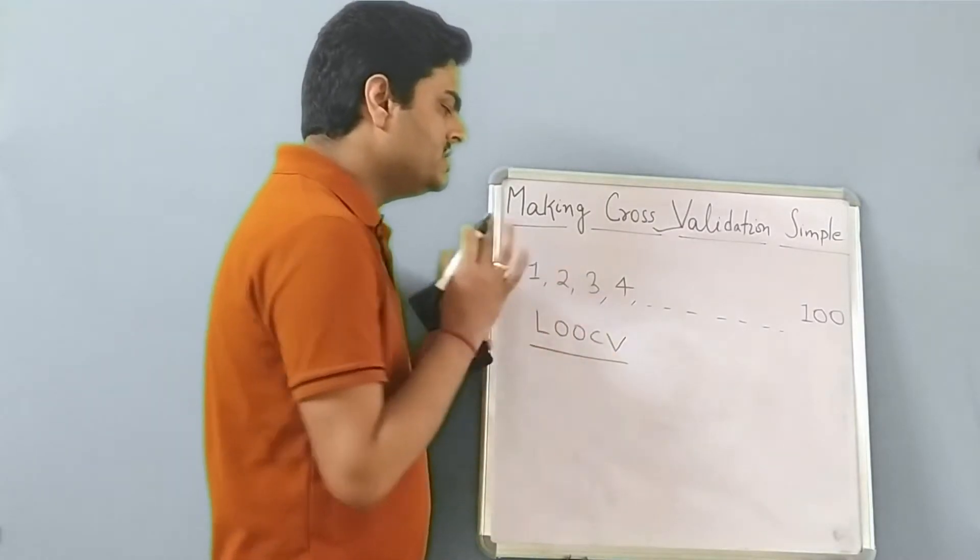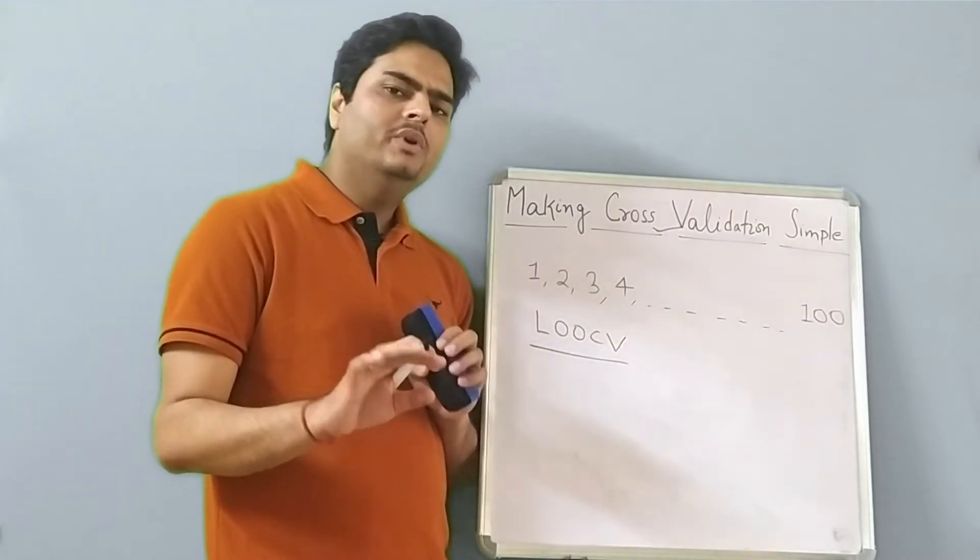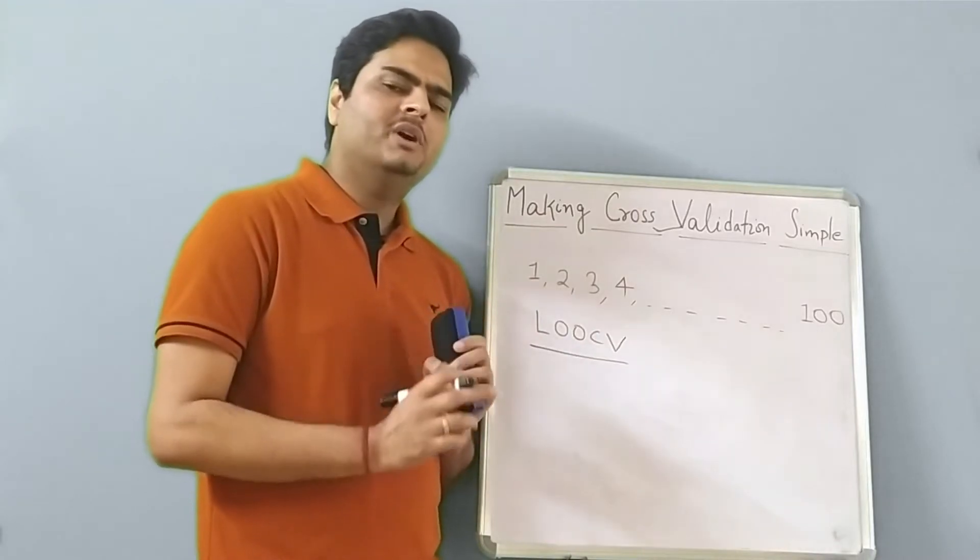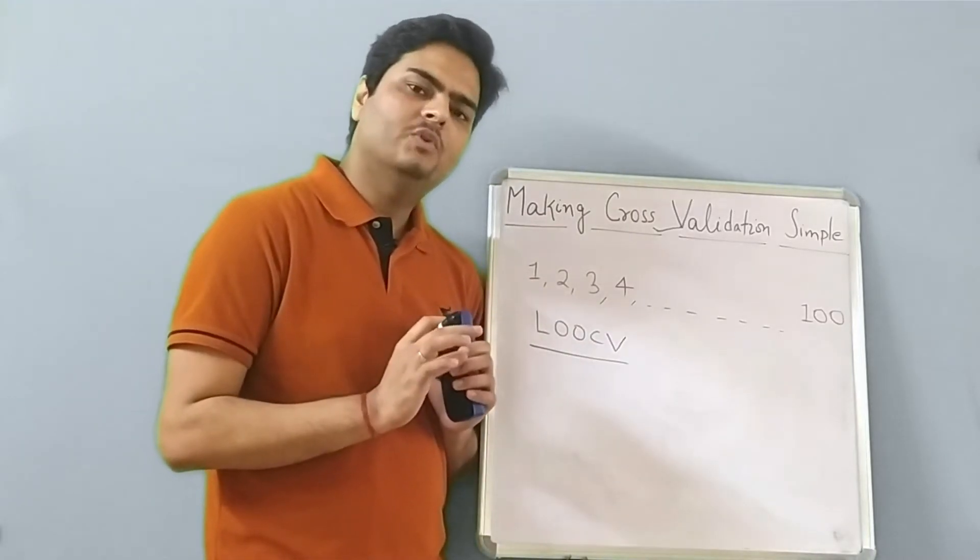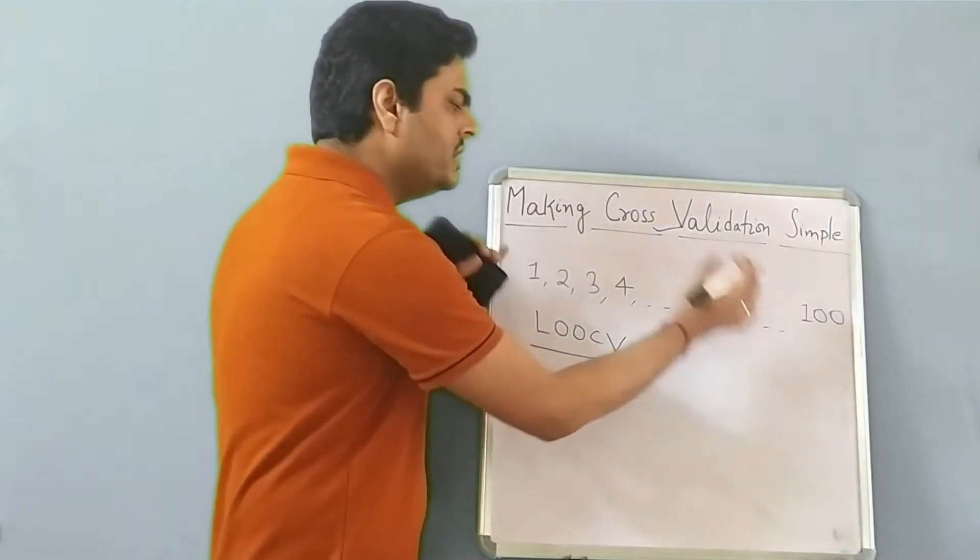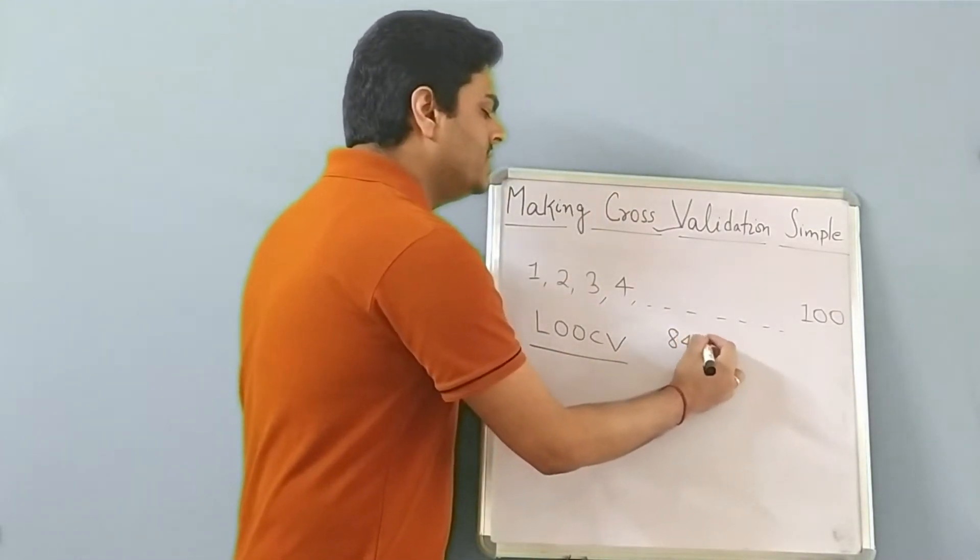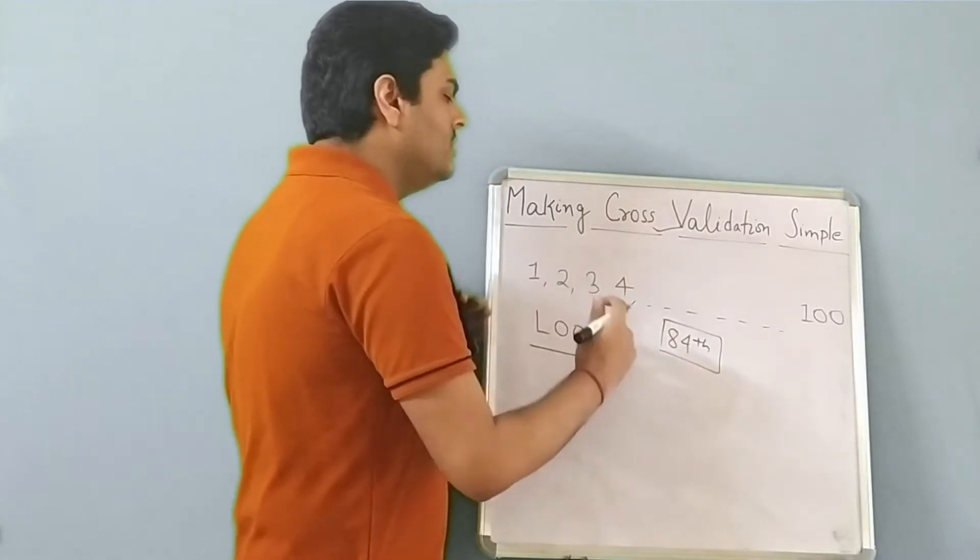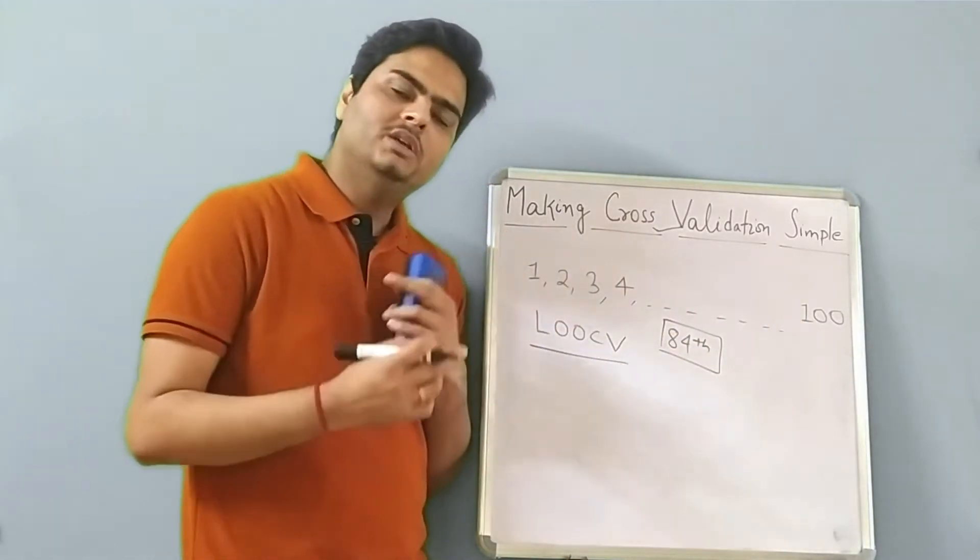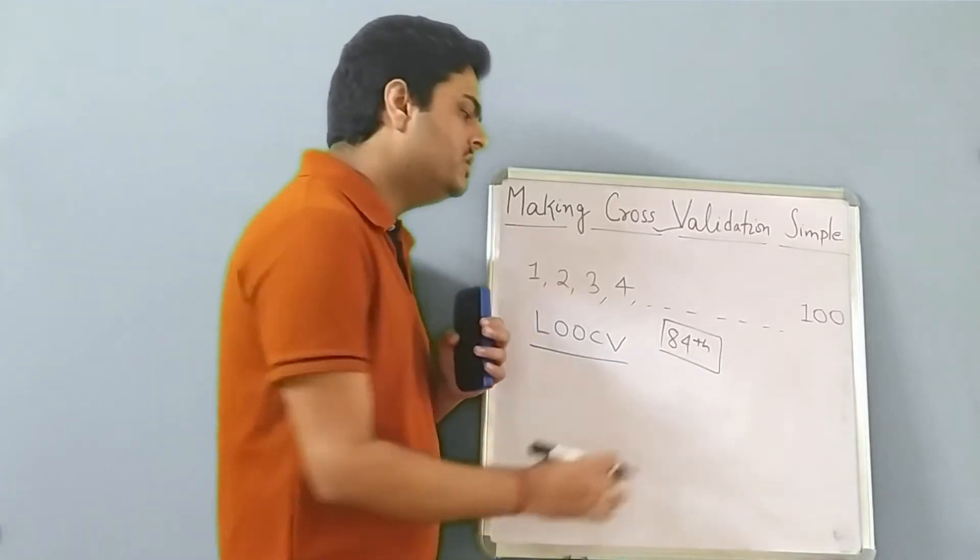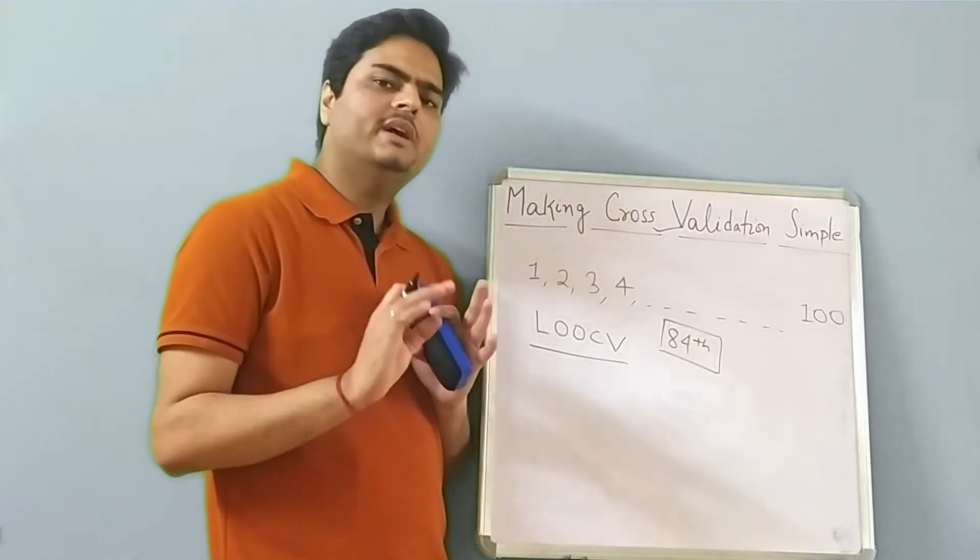In leave one out cross validation, what we do is we keep all the records in training apart from just one record out. What is the meaning of this? You have 100 records. Let us say randomly 84th record is kept out and on all those 99 records model is trained and model is tested on 84th record. This is iteration one.